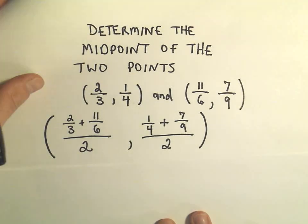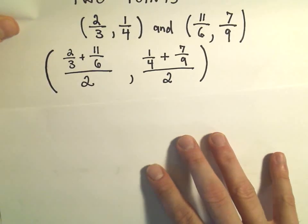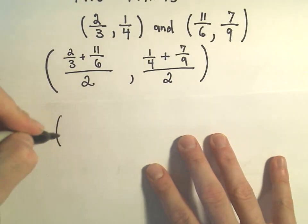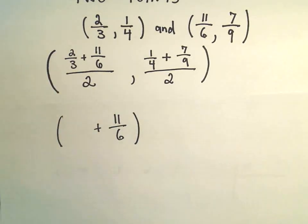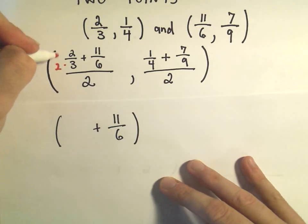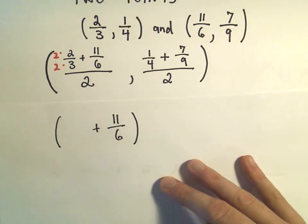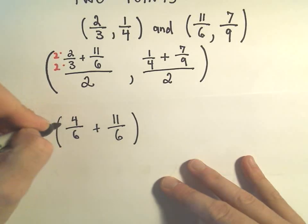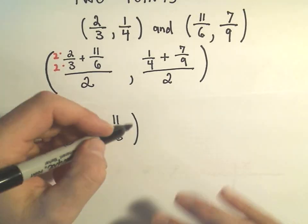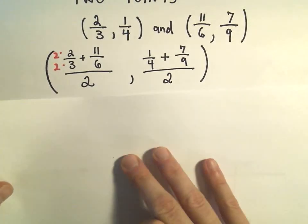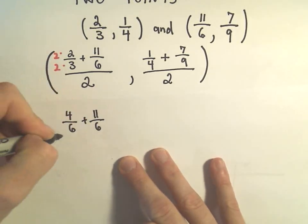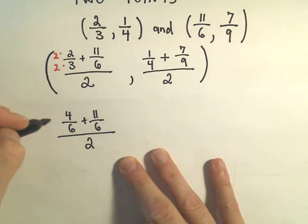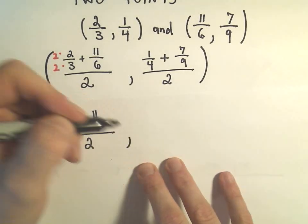Alrighty, so for the first one, we've got two-thirds. I believe I could multiply the top and bottom of the two-thirds just by 2 to get my common denominator of 6. So we would have 4 over 6. Let's rewrite this all together. So we would have 4 over 6 plus 11 over 6, again all that divided by 2, comma.